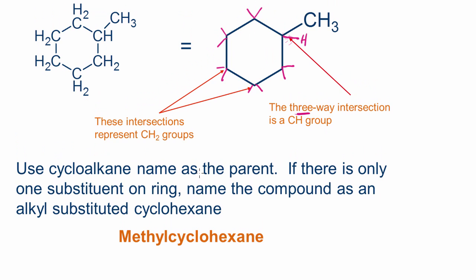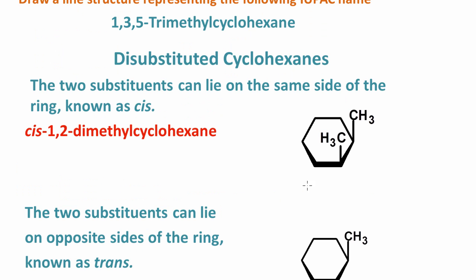How do we name the cycloalkanes? We use the cycloalkane name as the parent. In this case we have cyclohexane. If there's only one substituent on the ring, we just name it like any alkyl substituted alkane. In this case, it's an alkyl substituted cyclohexane. We would call this compound methylcyclohexane. When there's one substituent, we don't have to worry about numbering the carbons.